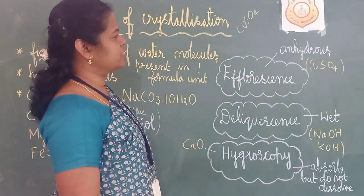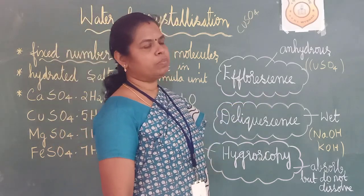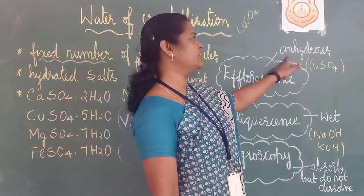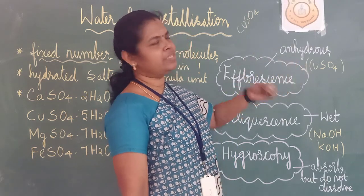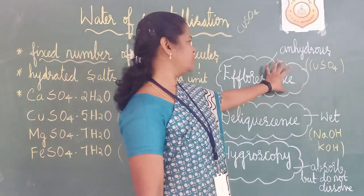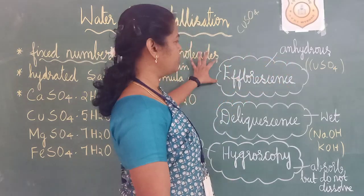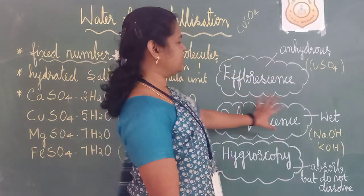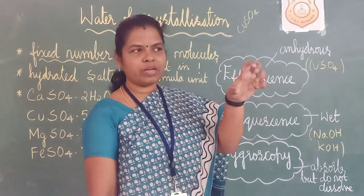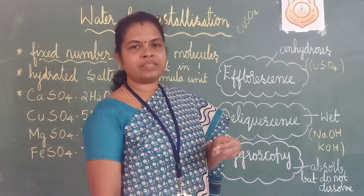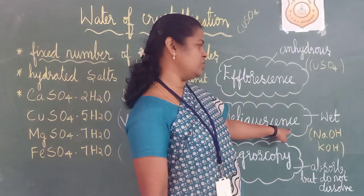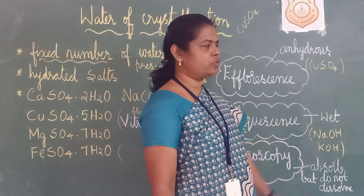A few more words to study. Efflorescence: when you heat the salt, it becomes anhydrous — it loses its color and water, and that salt is called anhydrous. For example, copper sulfate. These types of salts are called efflorescent salts. Deliquescence means the salt becomes wet — if you leave it in moisture or the atmosphere, it absorbs moisture and becomes wet, sometimes even turning into a solution. For example, sodium hydroxide and potassium hydroxide.